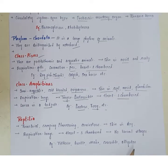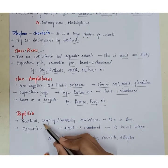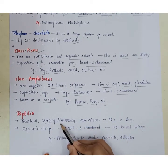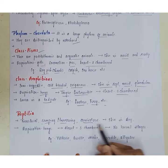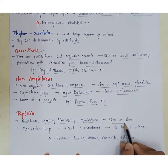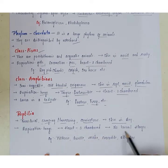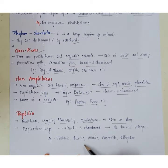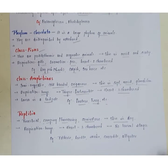Class Reptilia are terrestrial, creeping or burrowing, carnivorous animals. Their skin is dry, respiration occurs by lungs, the heart is three-chambered, and there are no larval stages. Examples include tortoise, turtle, snake, crocodile, and alligator.